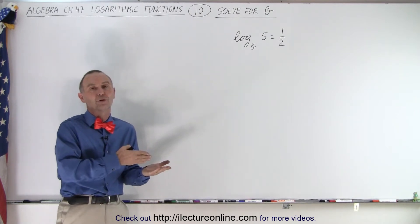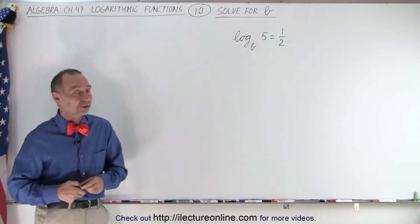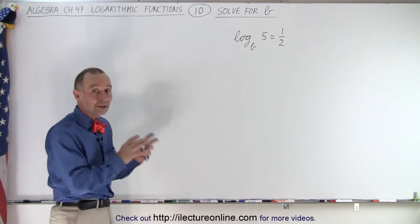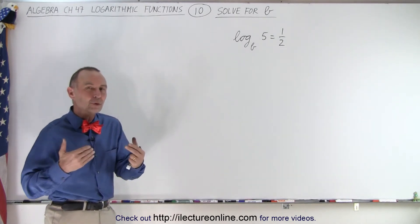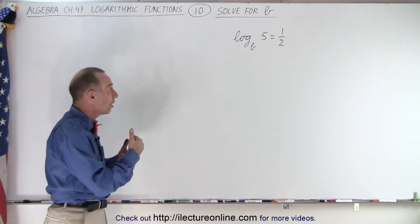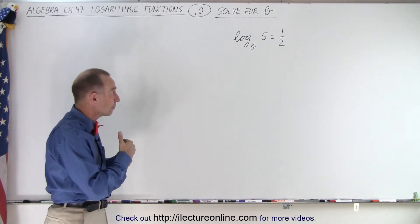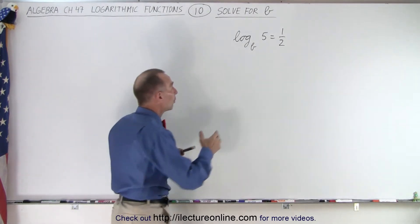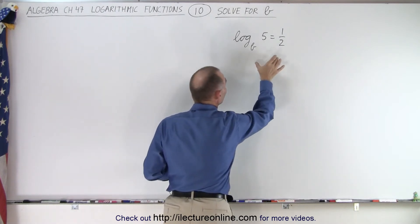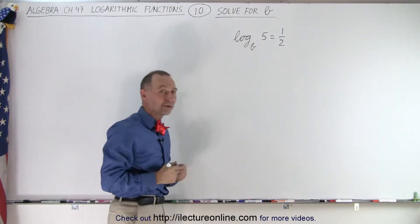We're going to take the left and the right side and set it equal to the base of the logarithmic function raised to those exponents. In other words, we're going to make the left and the right side the exponent of the base of the logarithmic function.